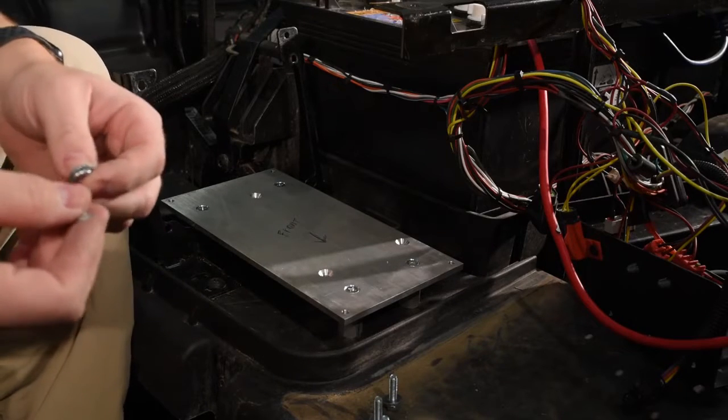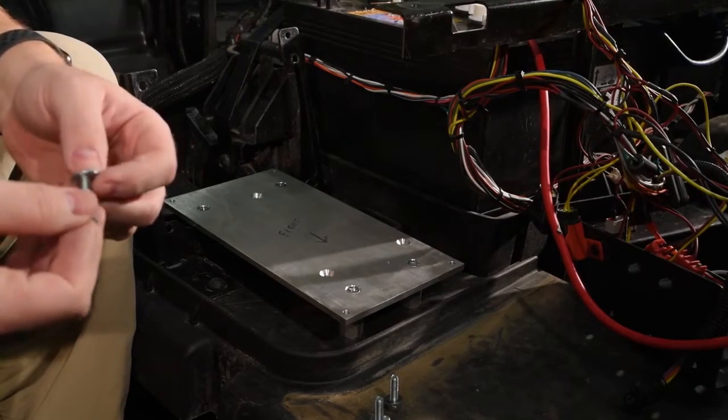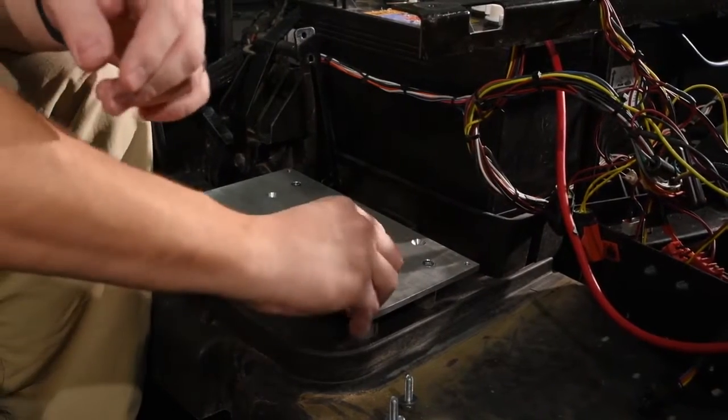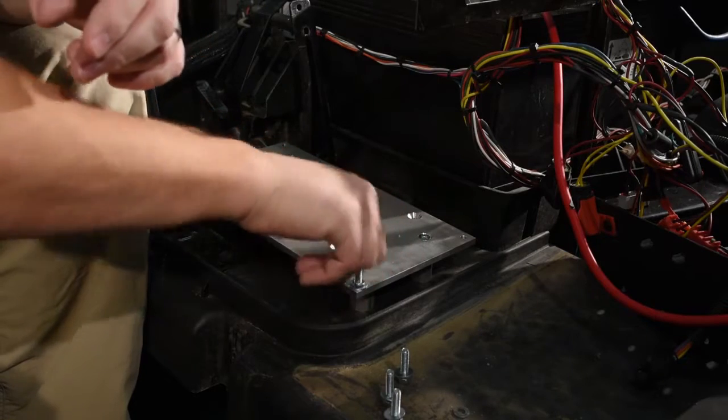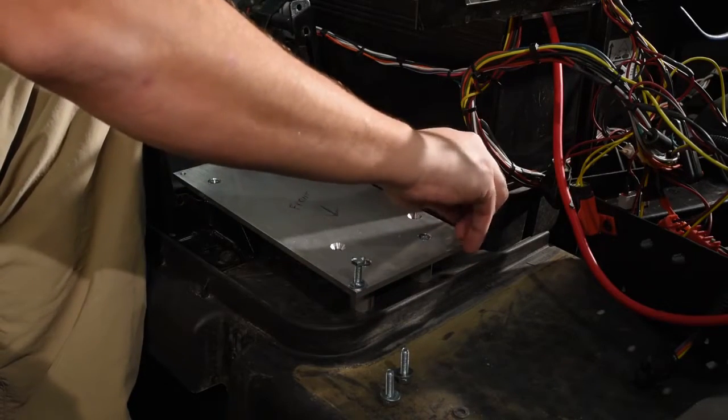Take the bolts with a lock washer and washer, and insert them into the front corners of the plate, leaving them loose so you can slide the controller in afterwards. Leave these loose so if you have the body on the vehicle during installation, you can slide the controller in underneath.